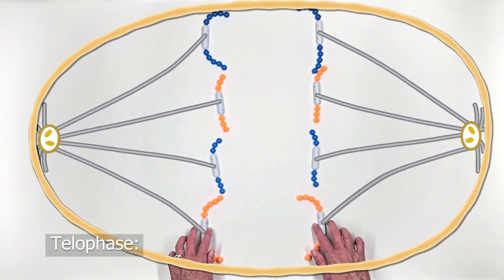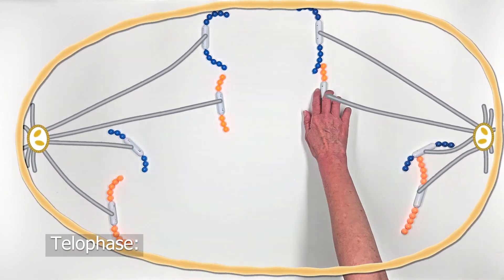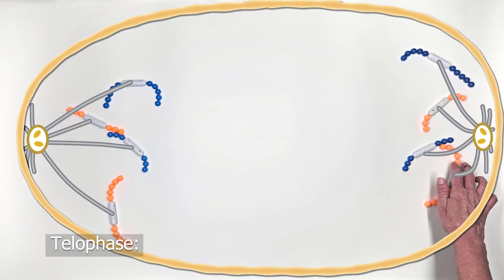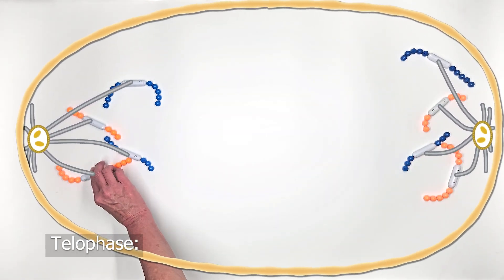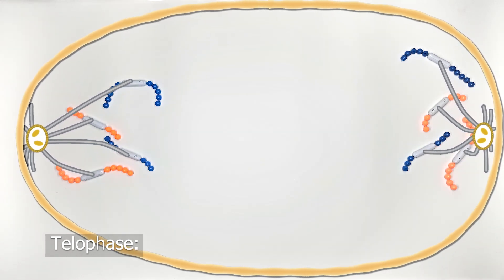In telophase, the chromosomes arrive at the opposite poles, and the opposite of prophase occurs. They are considered sister chromatids when they are connected at the centromere. Once they are separated, they are chromosomes.